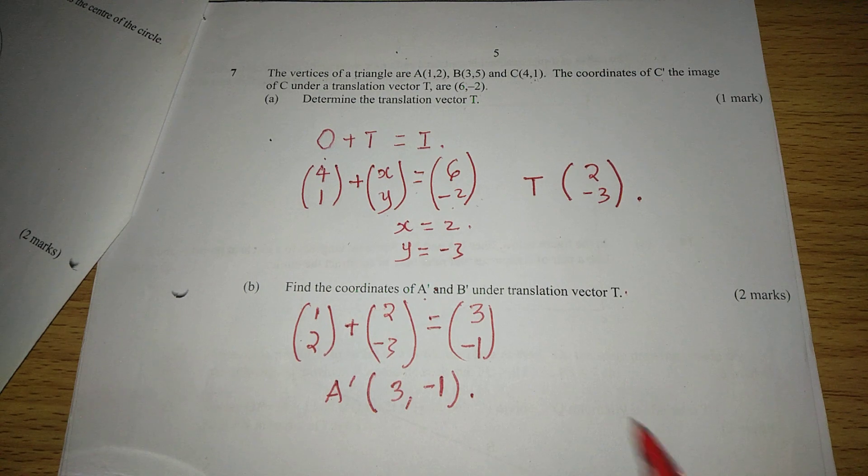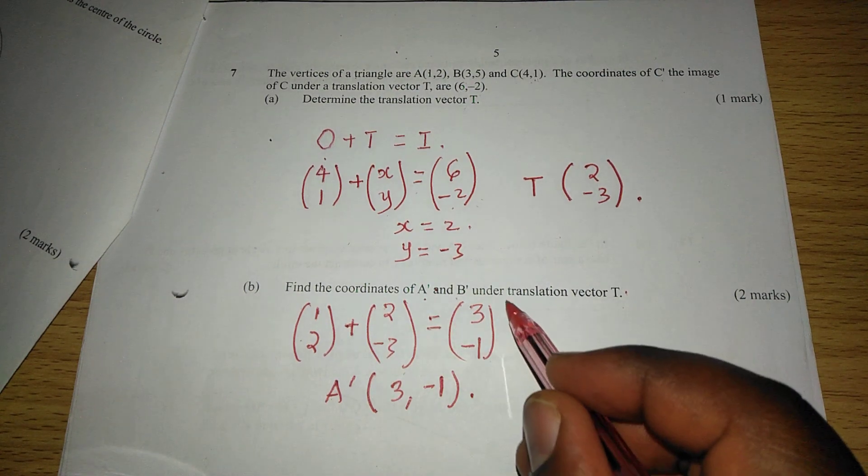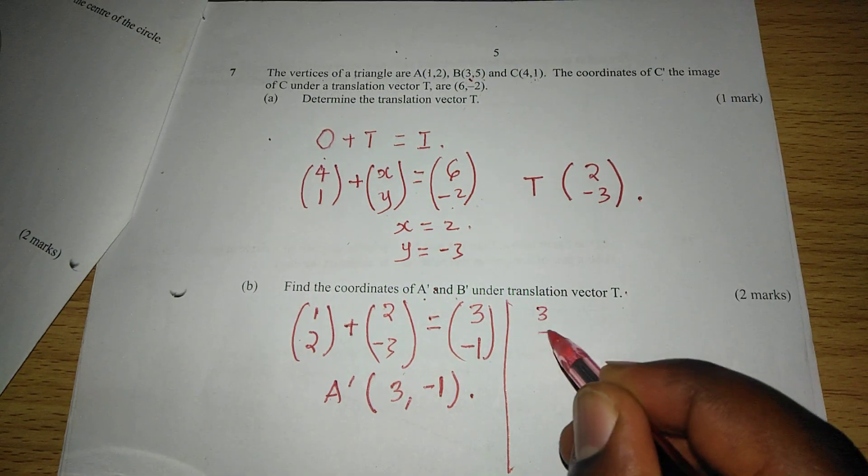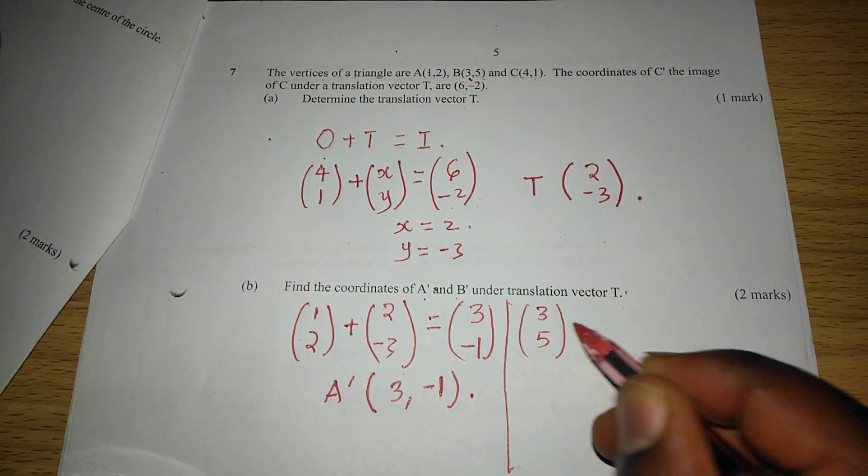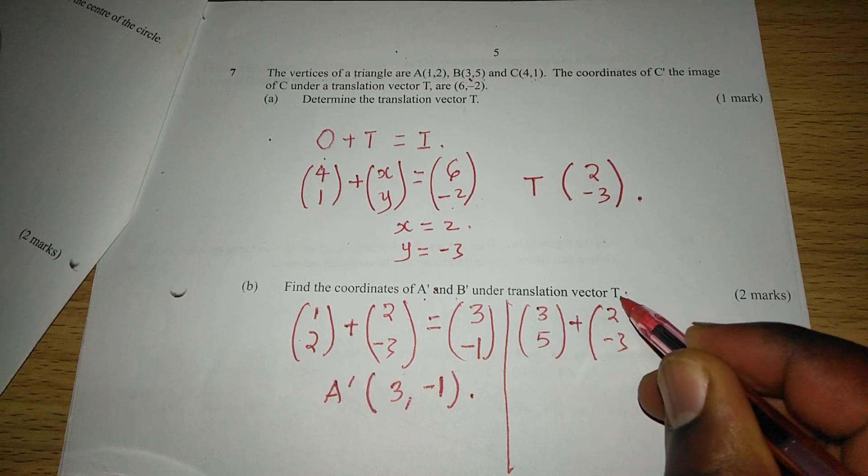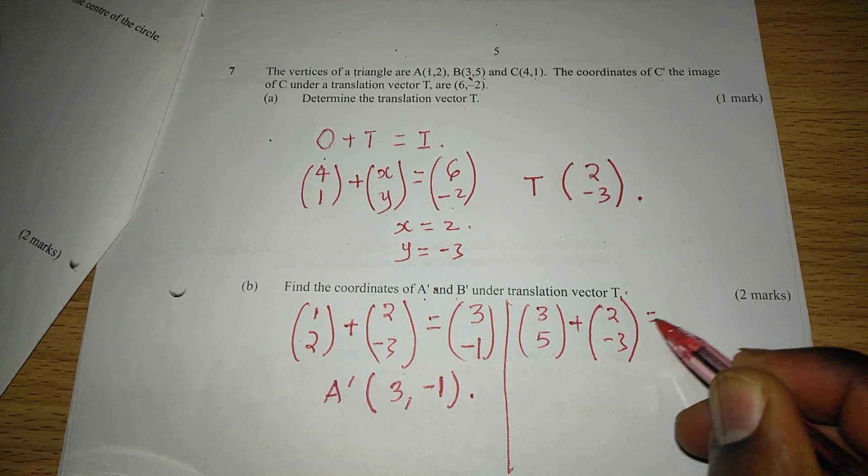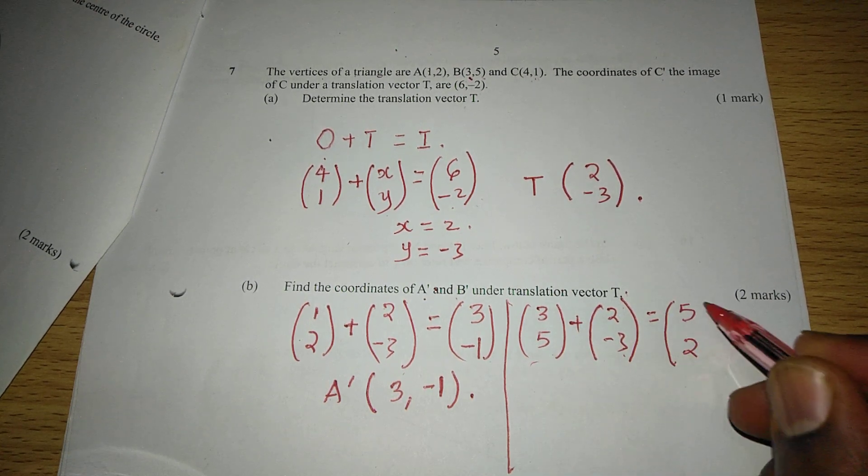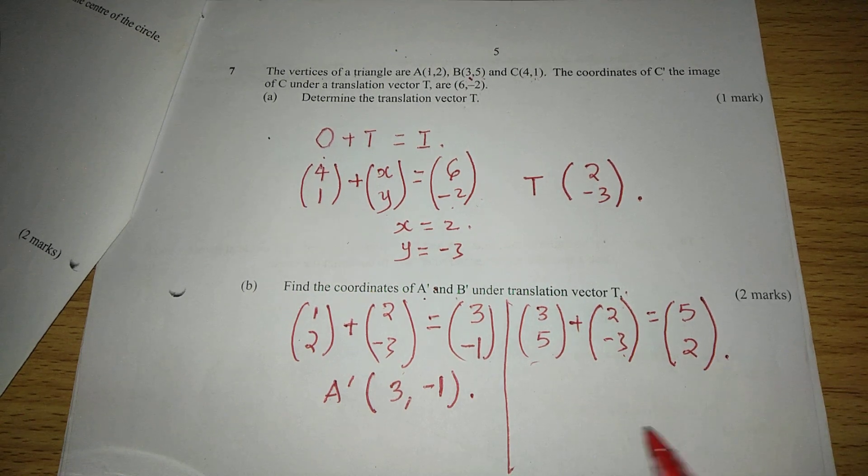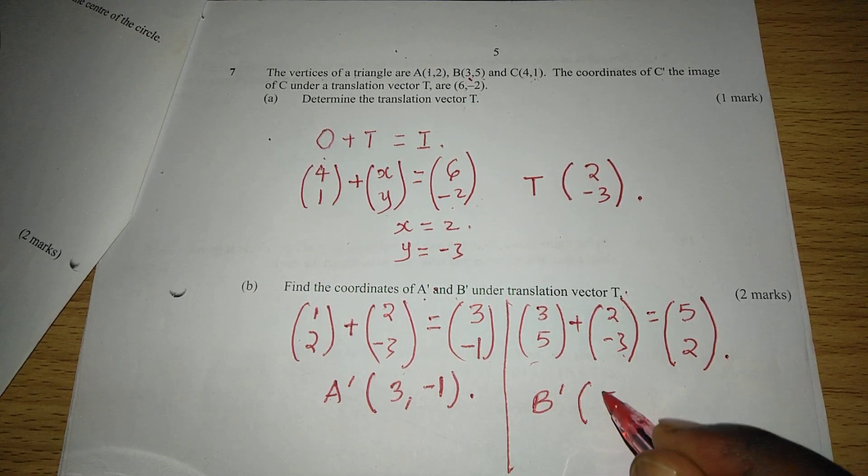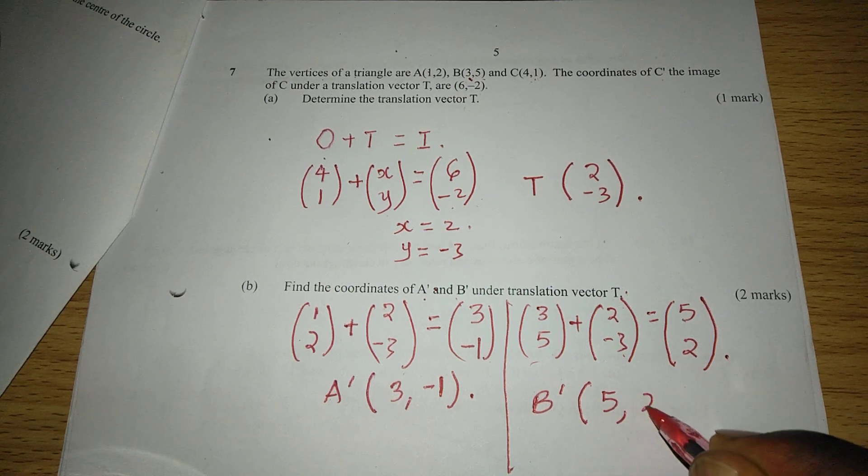The other part is B'. B is (3,5), so we're going to have (3,5), and we add the translation vector (2,-3). So this should give us (5,2), such that B' has coordinates (5,2).